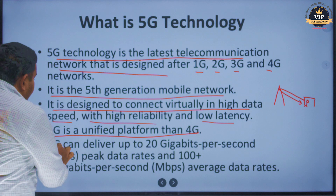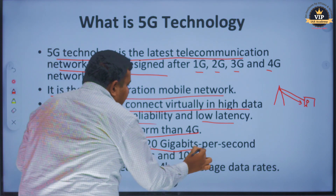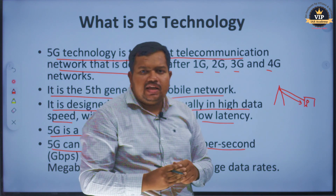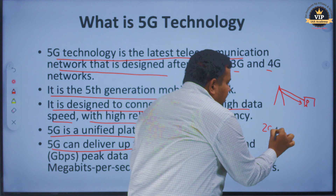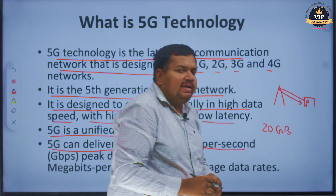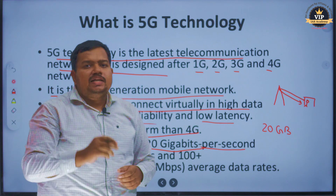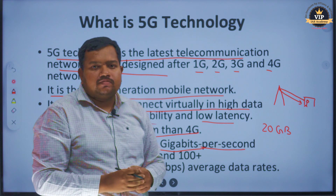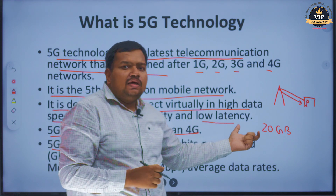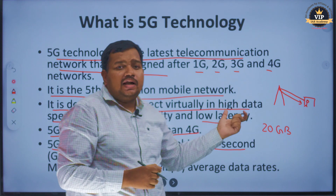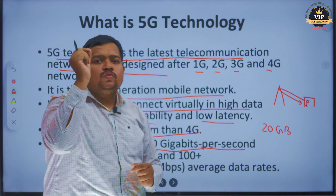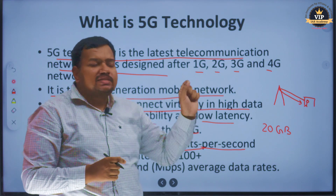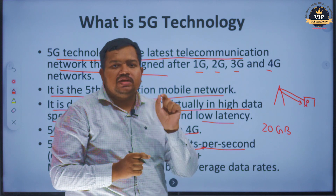5G can deliver up to 20 gigabits per second. The maximum speed of 5G is 20 GB per second. Generally, one HD movie is about 3 GB, so at 20 GB per second, almost 6 HD quality movies could be downloaded in one second. That is the maximum speed achievable using 5G technology.